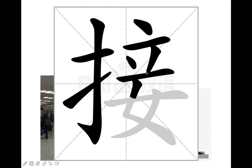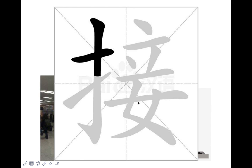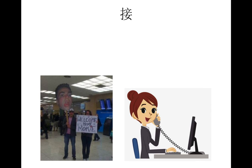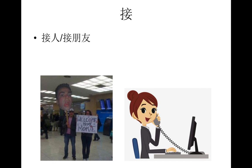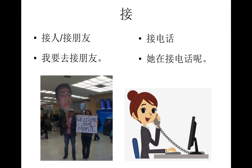我们来看，这是什么字？接。接的这个偏旁是什么字？女。对了，接的这边有女字旁。接什么呢？你看，他们在接人，对吗？在机场接人。或者，朋友，我要去接朋友。他在做什么？接电话。他在接电话。